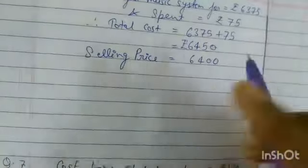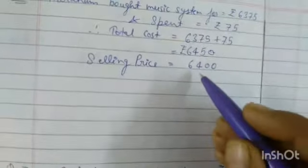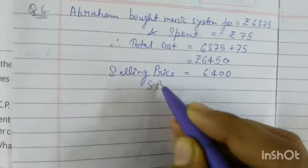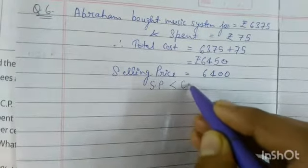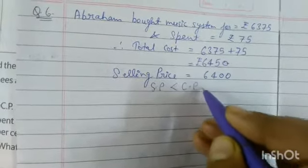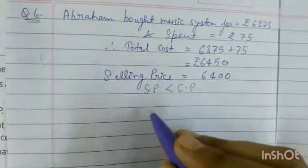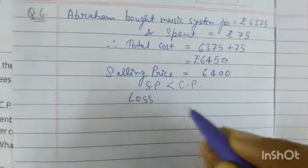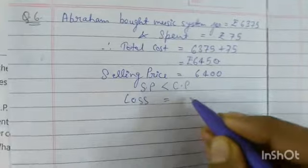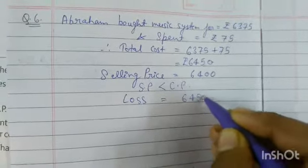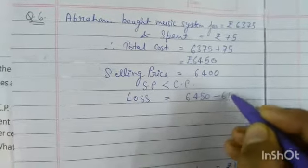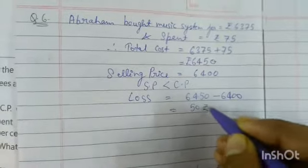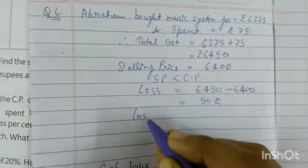Selling price is 6,400. Since sell price is less than the cost price of 6,450, there is a loss. Loss equals 6,450 minus 6,400, which gives 50 rupees loss.